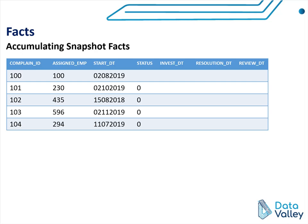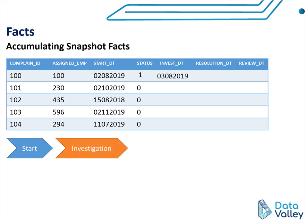For example, the first status is 0, which means this complaint request has been issued. If this complaint process changes from the start stage to the investigating stage, in the same fact table and in the same record, we will update the status for this complaint and keep changing it with the last updated status.